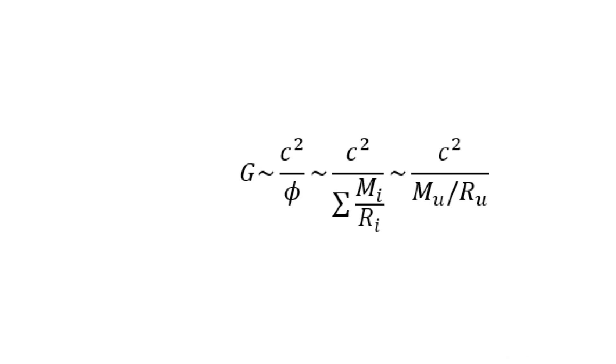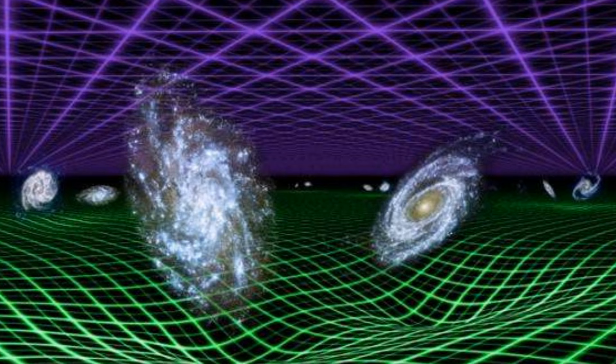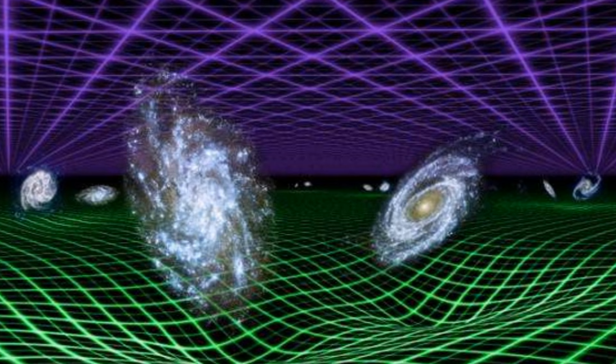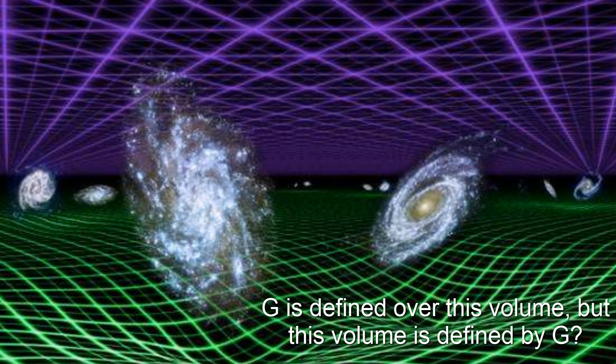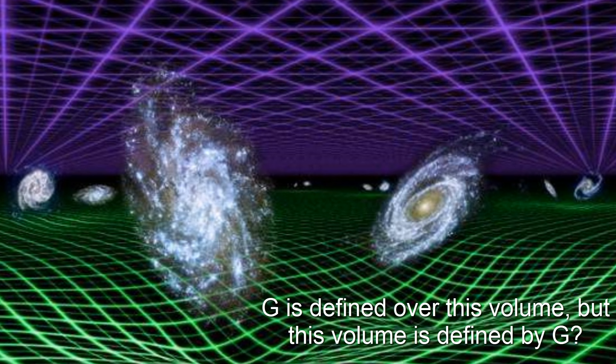In these theories, the effective gravitational constant is not fixed. It varies according to an integral over the past light cone volume of the observable universe, weighed by the matter-energy density divided by the distance from the point where the potential is evaluated. Yet, in a relativistic framework based on curved spacetime, the gravitational constant itself influences the very volume over which it is defined.